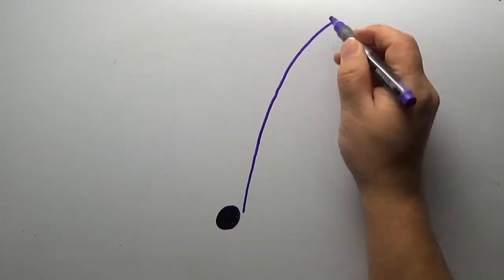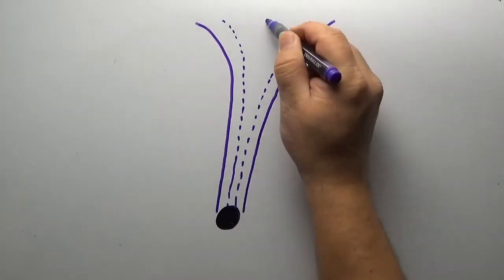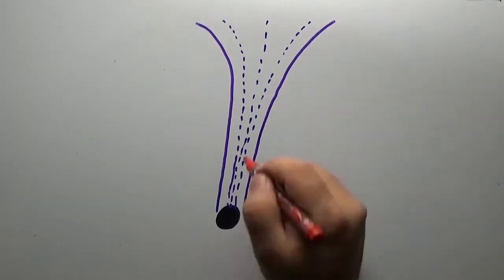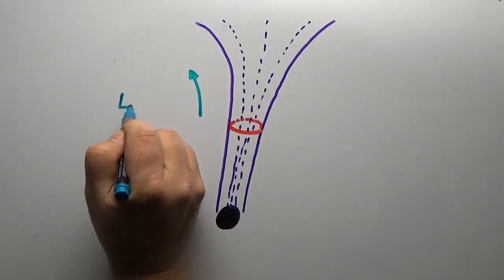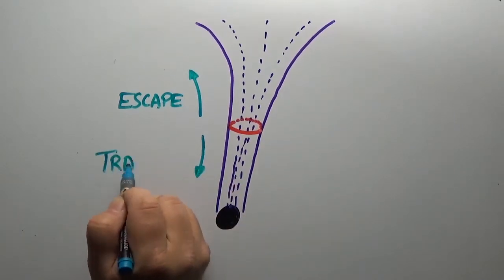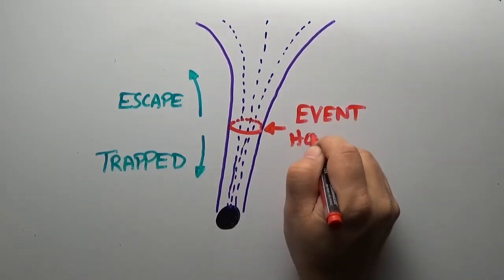Black holes curve spacetime so strongly that if you fall deep down in the gravitational well, you reach a point of no return. If you're far away, you can escape from a black hole. But if you stray too close, you are trapped forever. We call that point of no return the event horizon.